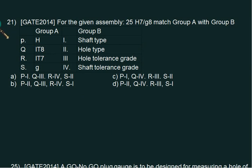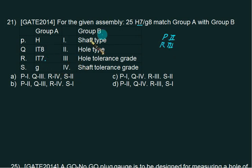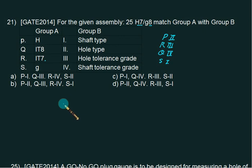This is a match-the-pair question with groups to match. Given 25 S7/G8: 25 is the basic size, H is the fundamental deviation for hole tolerance, IT8 is the tolerance grade for shaft, IT7 is the tolerance grade for hole, and G is the fundamental deviation for shaft. Therefore P represents 2, R represents 3, Q represents 4, and S represents 1. Choice D is the correct answer.